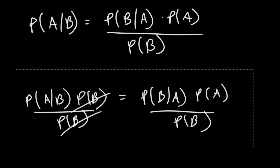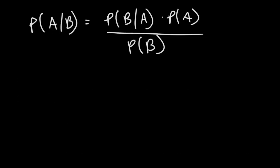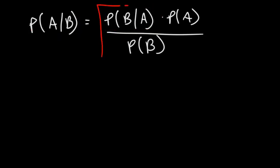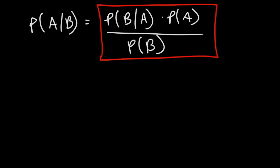So Bayes' Theorem helps us to calculate the conditional probability of an event if you know the reverse conditional probability, with some other probability values as well. But this is the basic formula of Bayes' Theorem: P(A|B) is equal to P(B|A) times P(A) divided by P(B).